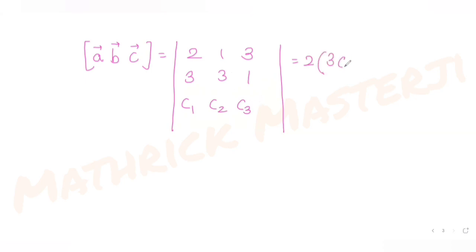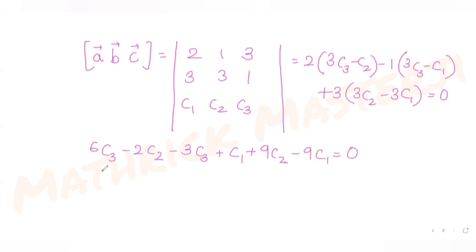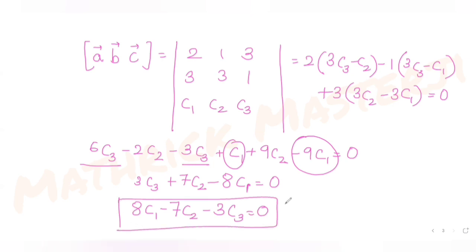Expanding the determinant: 2(3c3 − c2) − 1(3c3 − c1) + 3(3c2 − 3c1) = 0. This gives 6c3 − 2c2 − 3c3 + c1 + 9c2 − 9c1 = 0, which simplifies to 3c3 + 7c2 − 8c1 = 0, or equivalently 8c1 − 7c2 − 3c3 = 0.